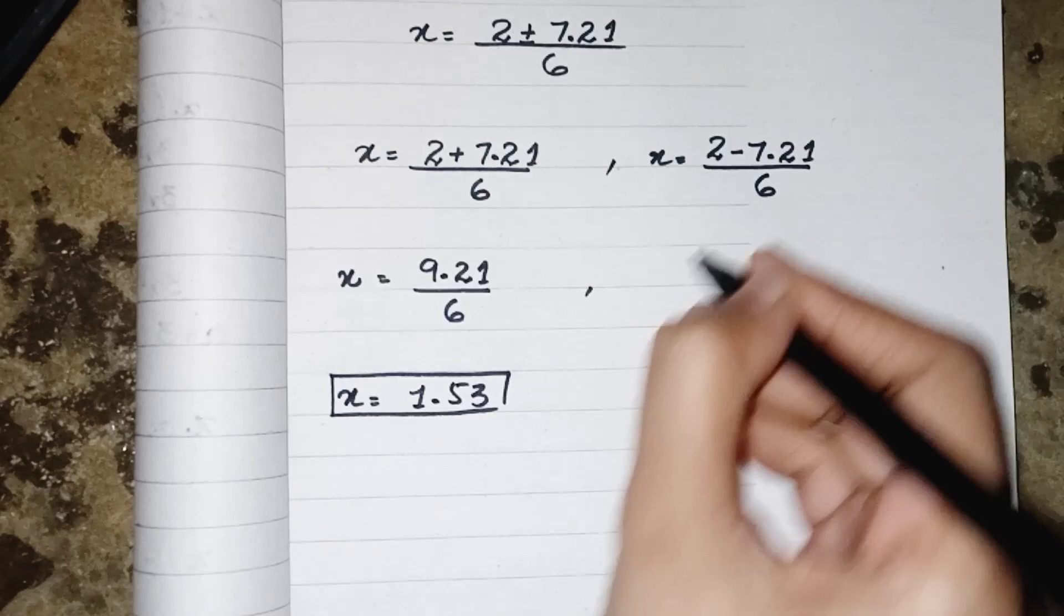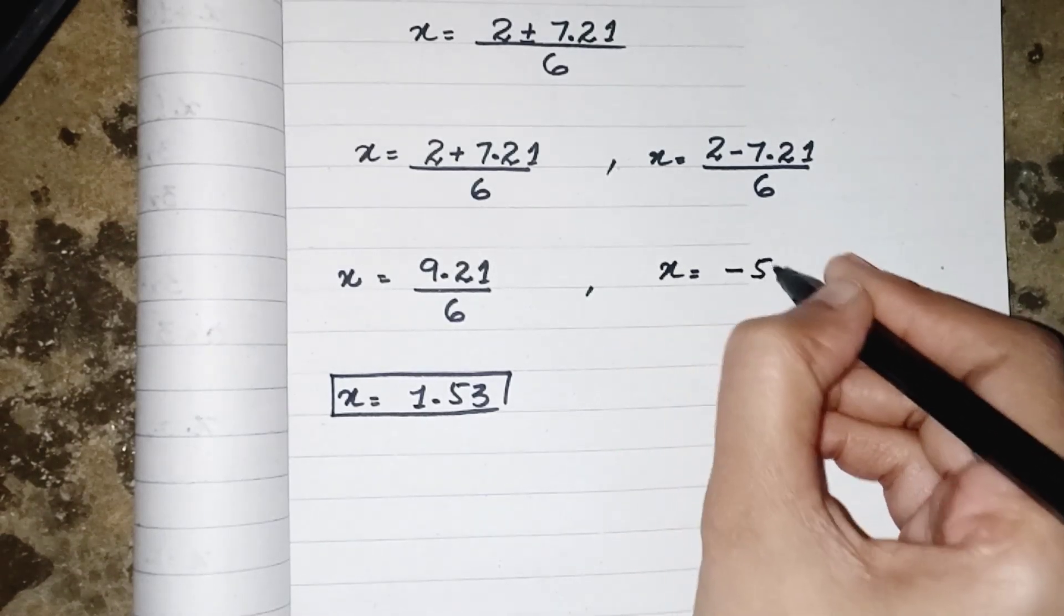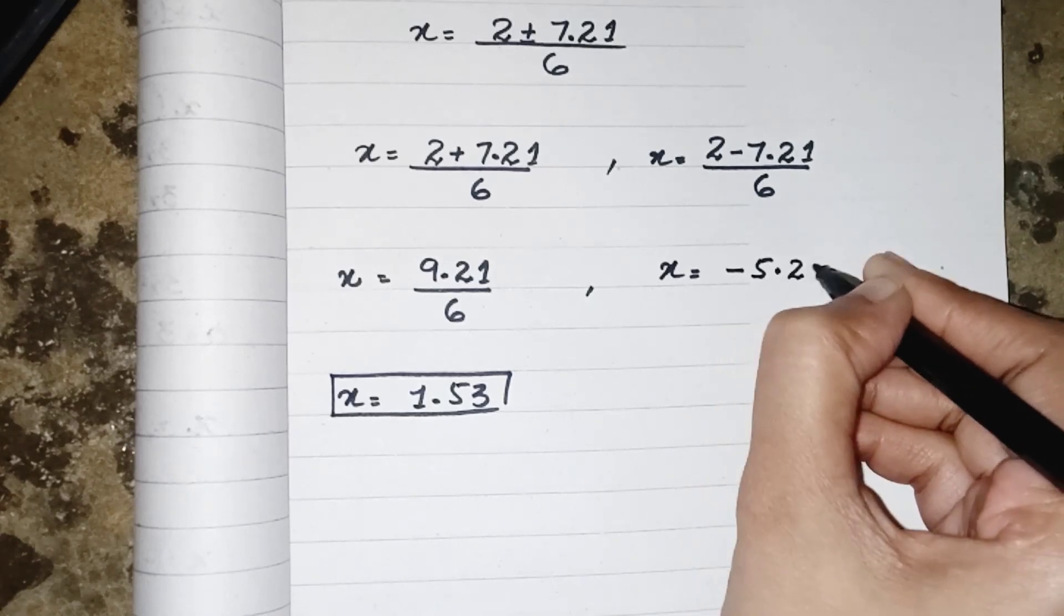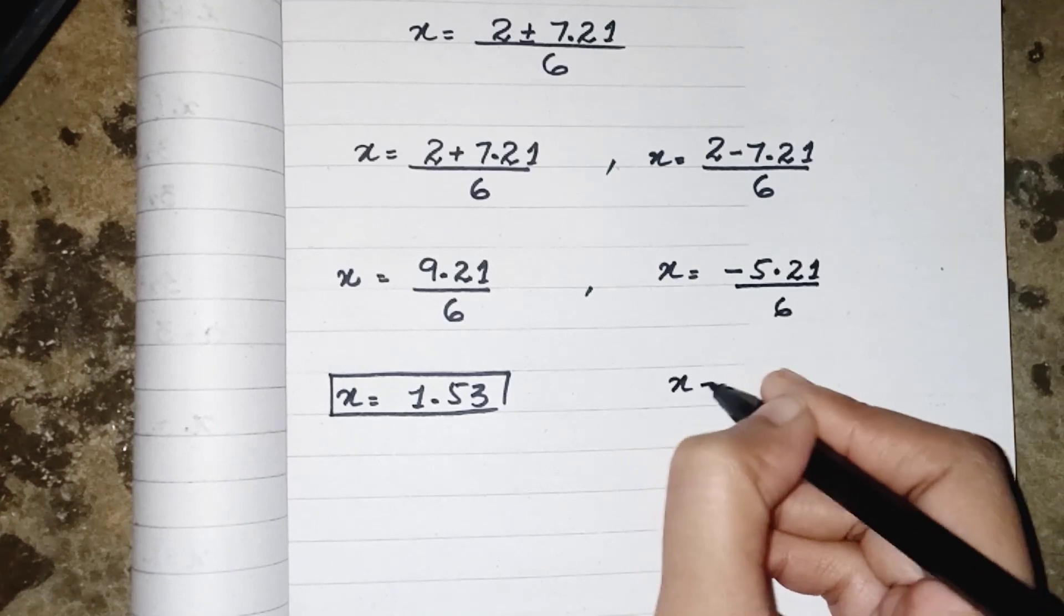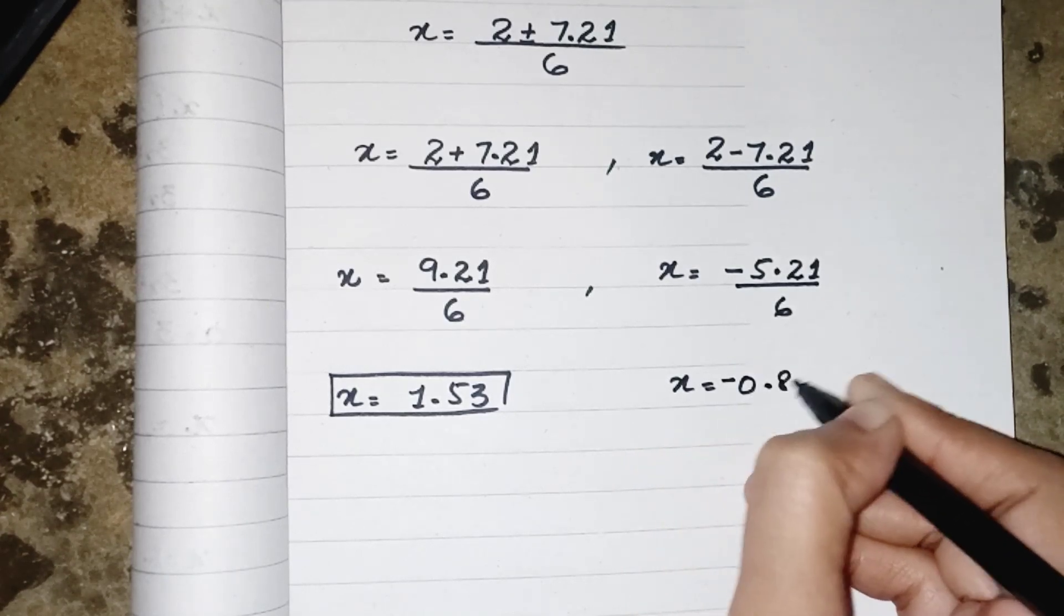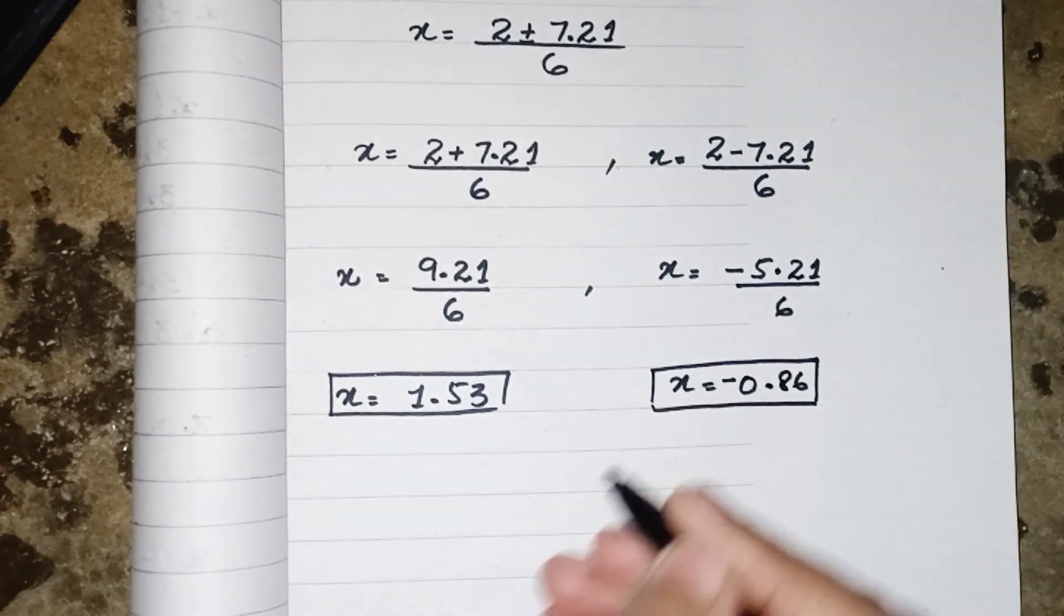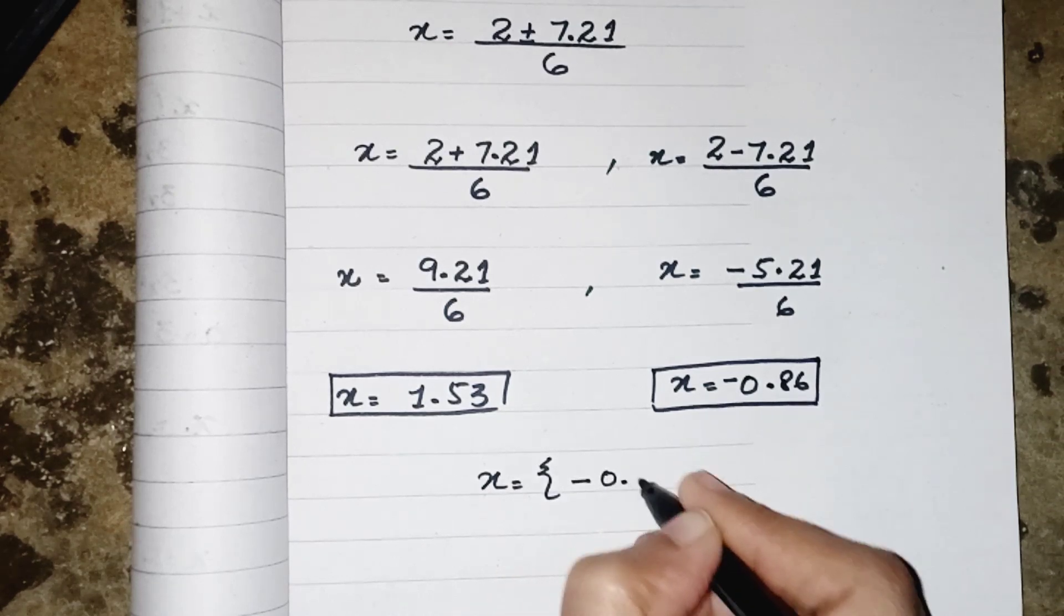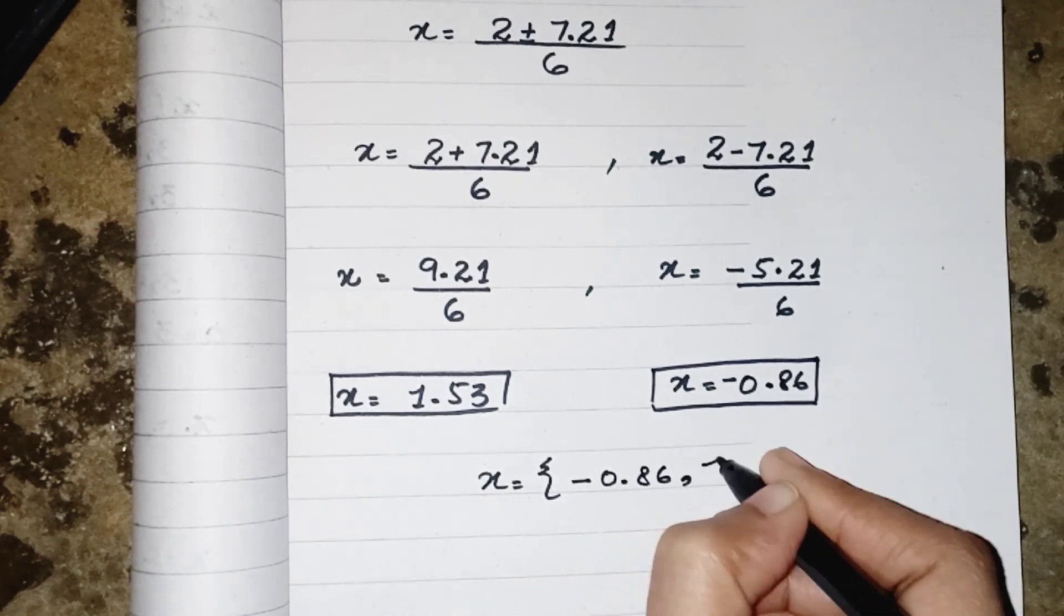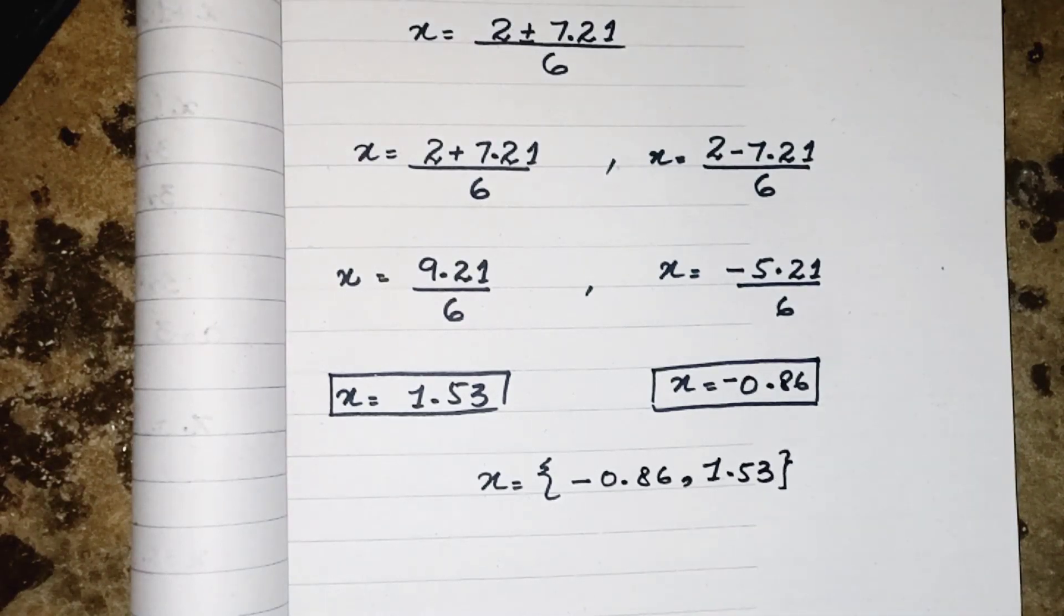Similarly by subtracting, when we subtract 2 from 7.21 we will get negative 5.21 and after division we will get -0.86. So we get both values of x, so my solution set will be -0.86 and 1.53. Hope you like the video, please subscribe to support, take care bye.